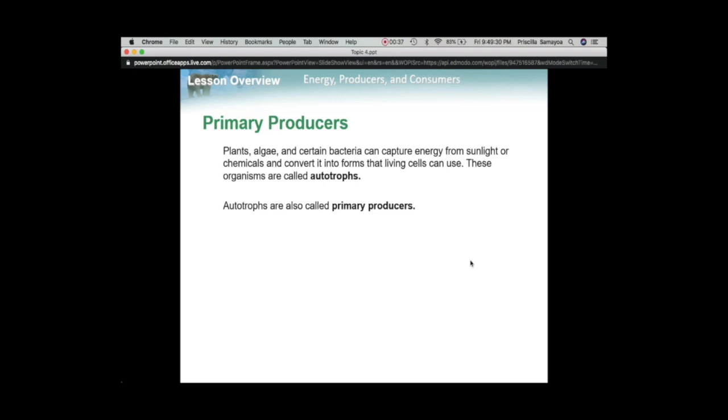Autotrophs - auto means self. They make their own food. Make sure you understand that autotrophs are the primary producers. They make their own food and do not feed off of anyone else.